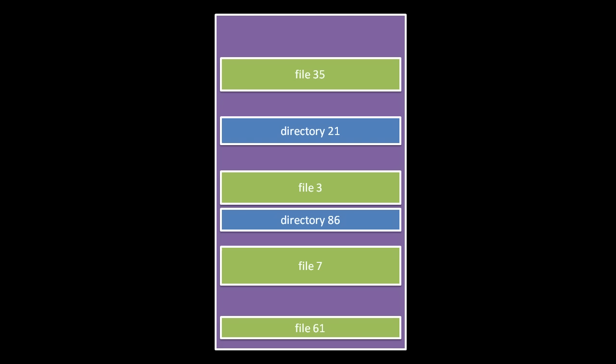So, within a directory, you can have a file and directory both named, say, Albert, but you can't have more than one file named Albert or more than one directory named Albert. When a partition is newly created, it starts out with no files and no directories except for one special directory called the root directory, which cannot be deleted.